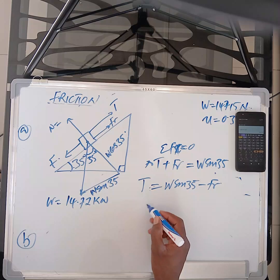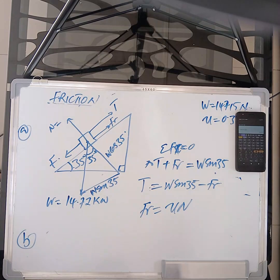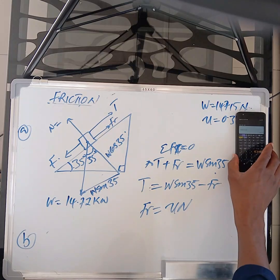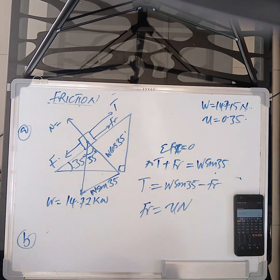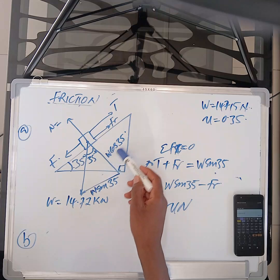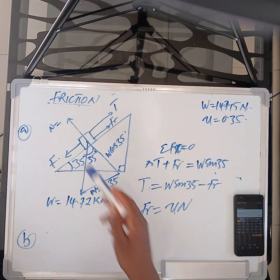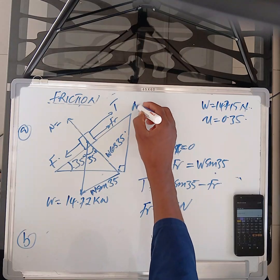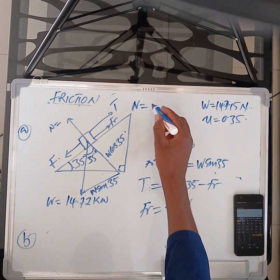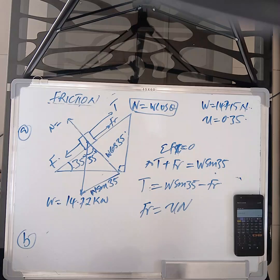So let's leave it there. We're going to say FR is equal to mu multiplied by normal. And also, that's what we have been doing. Mu, we have already been given. It's 0.35. The normal is this one. We say. It's in the Y. This one is the same as this one. So in this case, in fact, normal, remember what we said in the beginning, normal is W cos theta. That's what we said.